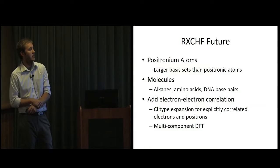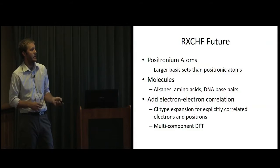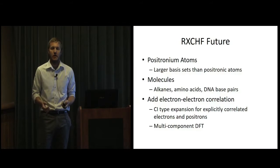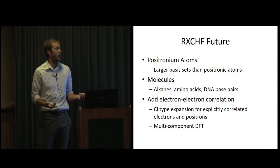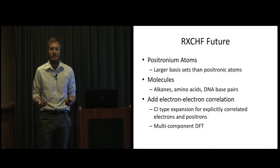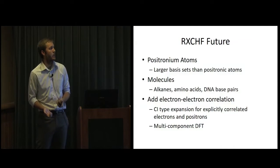And then lastly, we'd like to add electron-electron correlation. We have some ideas for doing like a truncated CI type expansion involving the special electrons and the positron orbitals. We also have a variant of DFT, multicomponent DFT, where you have different types of quantum electron particles. So you can do DFT both for positrons and for electrons. And we could add electron-electron correlation in that way.